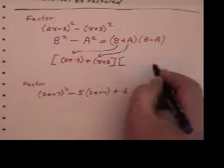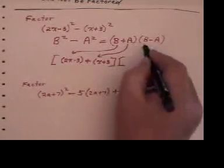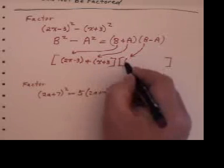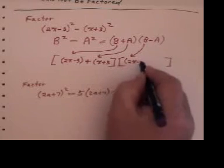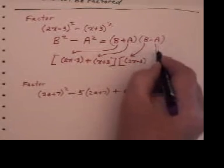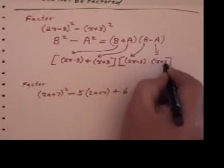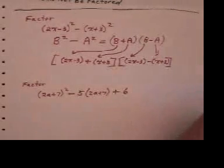Now I'm going to do the same here. Take the first bracket, which is 2X minus 3, and the second bracket, which is X plus 3, and put a minus sign between them.